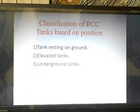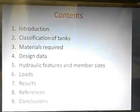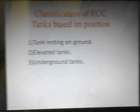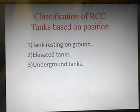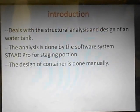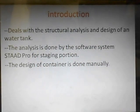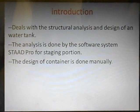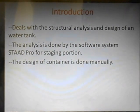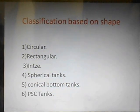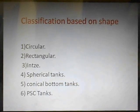These are the contents we are going to cover. Classification of OHC tanks based on position: tanks resting on ground, elevated tanks, and underground tanks. Coming to introduction, our structure deals with the staging part and the reservoir part. The staging part will be designed with STAAD.Pro and the reservoir part manually. Classification based on shape — there are six types: circular, rectangular, Intze, spherical, conical bottom, and two-stage tanks.